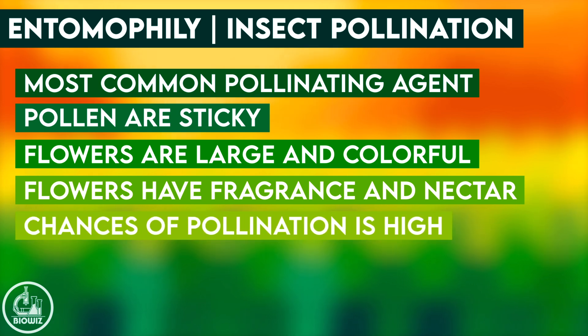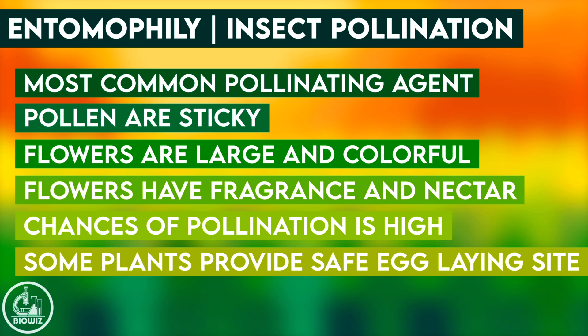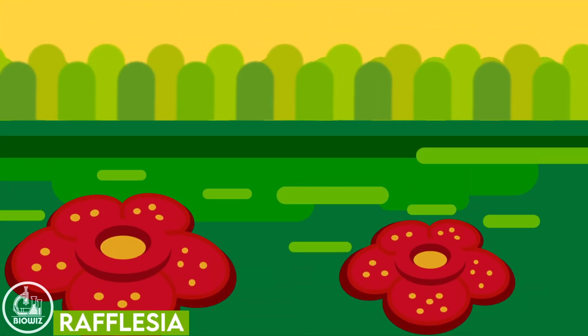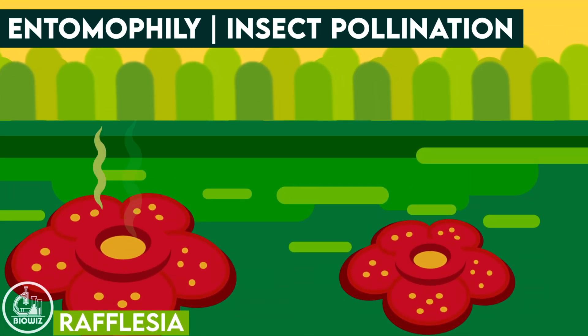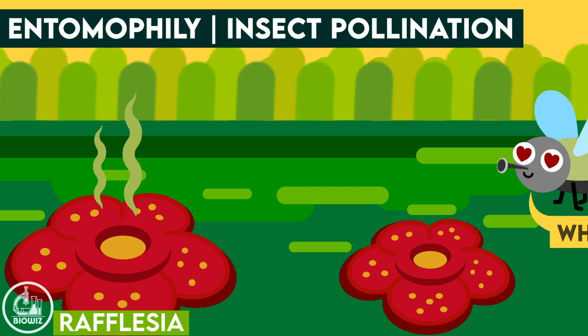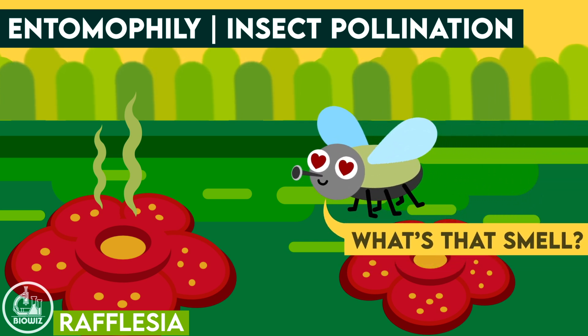In this type of pollination, the chances of pollination are very high. Some plants attract flies and beetles for pollination by releasing a foul smell of rotting flesh.